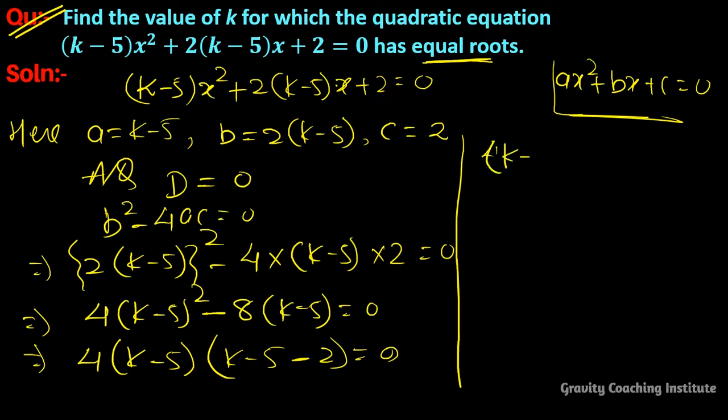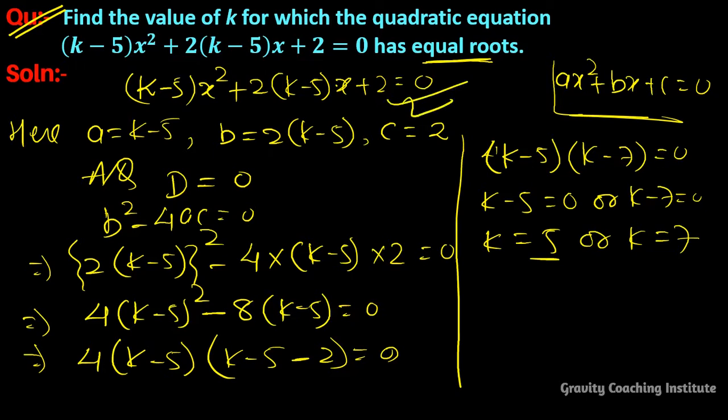So k - 5 = 0 or k - 7 = 0, giving us k = 5 or k = 7. Our answer is k = 7.